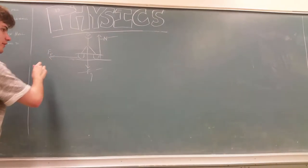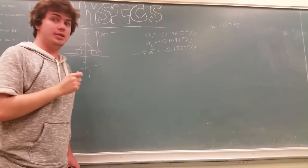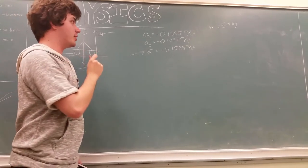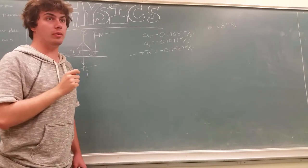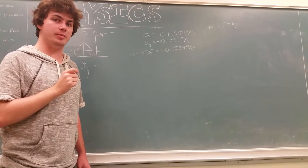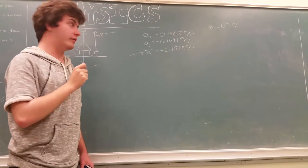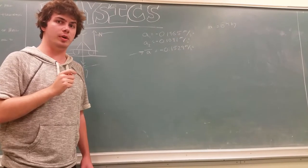We also have the force of friction pulling him back, slowing him down just a little bit. So, from the two different videos, we used Tracker to get two different accelerations, negative 0.1965 meters per second squared and negative 0.1091 meters per second squared. We averaged those two to get an average acceleration of negative 0.1529 meters per second squared, which we will use in the calculation.